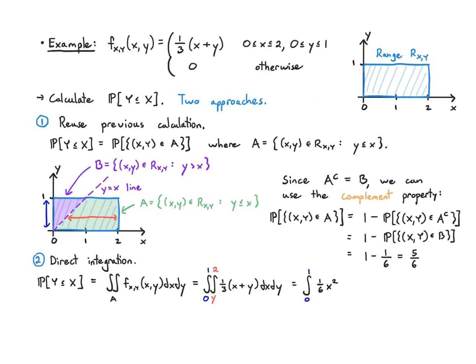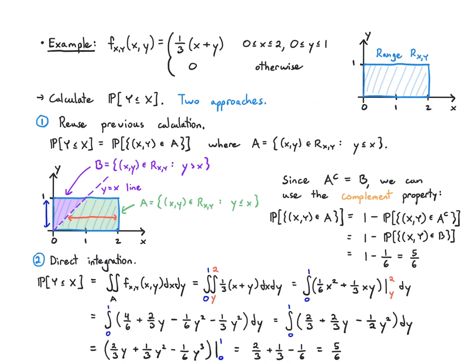Now I can follow this through. I integrate the inside: I get one-sixth x squared plus one-third xy, evaluate from y to 2. I'm plugging that in, getting a lot of terms: four-sixths plus two-thirds y minus one-sixth y squared minus one-third y squared dy, from 0 to 1. That's two-thirds plus two-thirds y minus one-half y squared dy. That works out to be two-thirds y plus one-third y squared minus one-sixth y cubed from 0 to 1. That's two-thirds plus one-third minus one-sixth, which is five-sixths, same thing as we got before. You can see that these integrals can very quickly get out of hand. They can quickly become complicated, so we always want to try to use all the tricks in our book to make them as simple as possible.